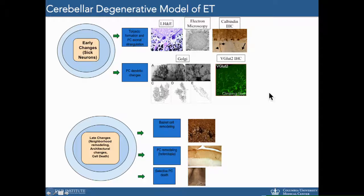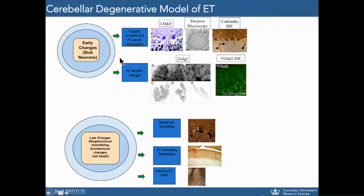Shown here are some examples of neuropathological findings from essential tremor patients, where you see axonal swellings and axonal degeneration in post-mortem brain tissue from ET patients, as well as, later in the disease, basket cell remodeling and eventual Purkinje cell death.